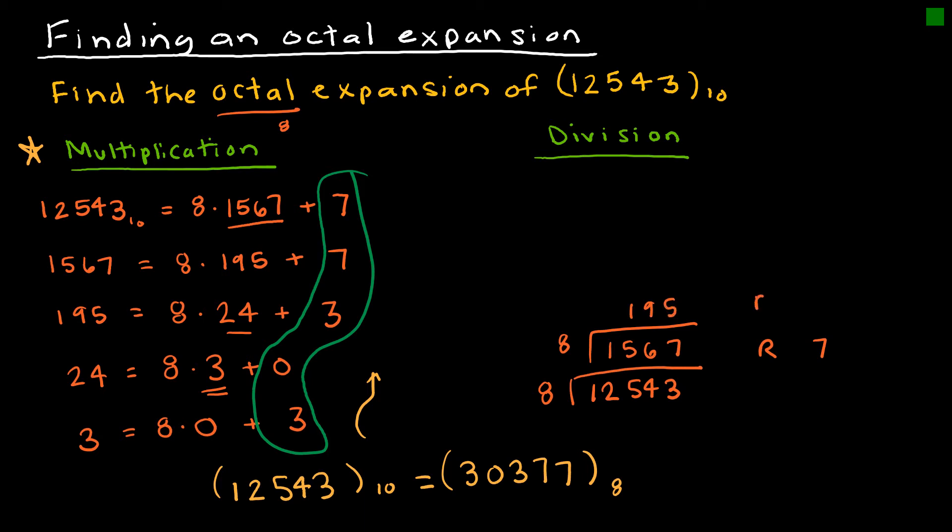Just as I did before, I would get 195 with a remainder of 7. Then I would divide by 8 again.